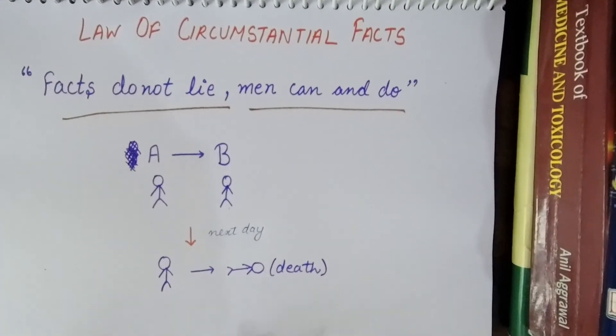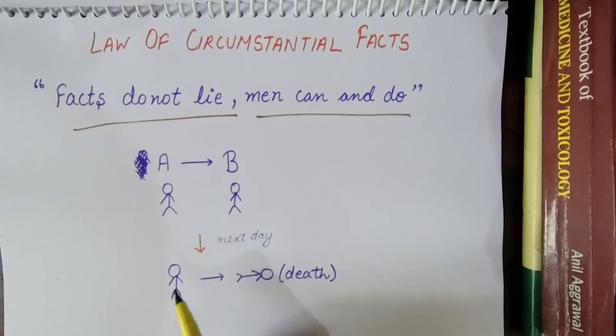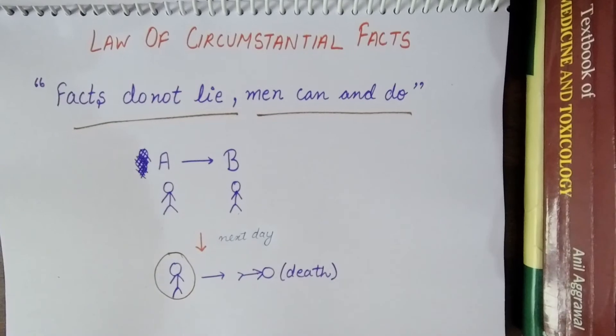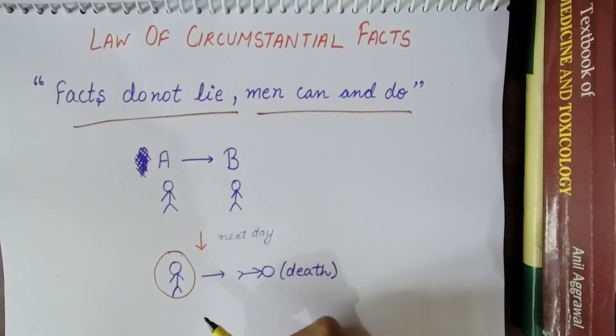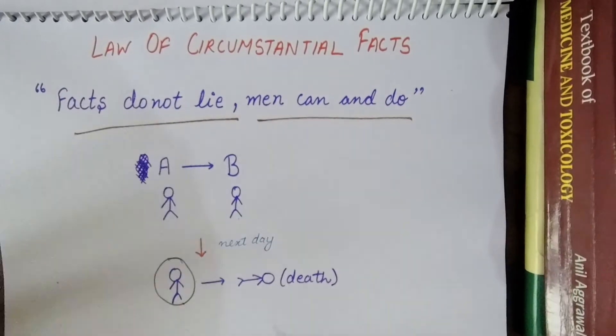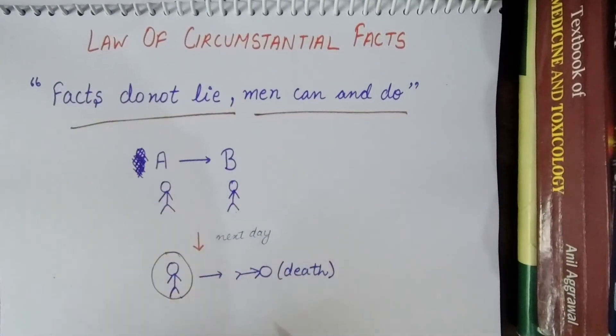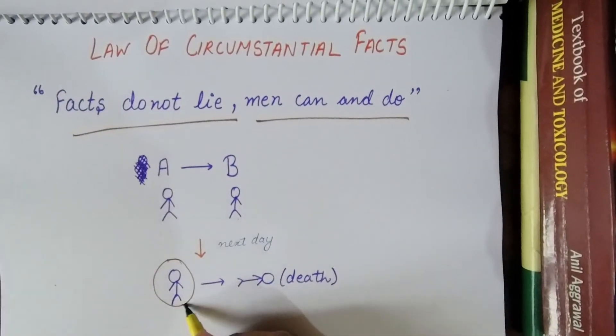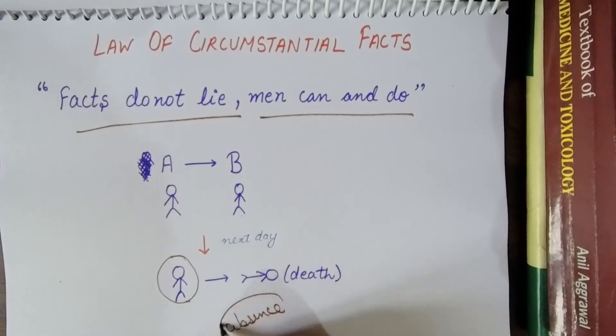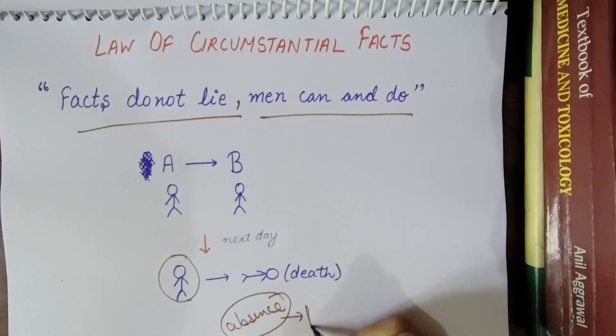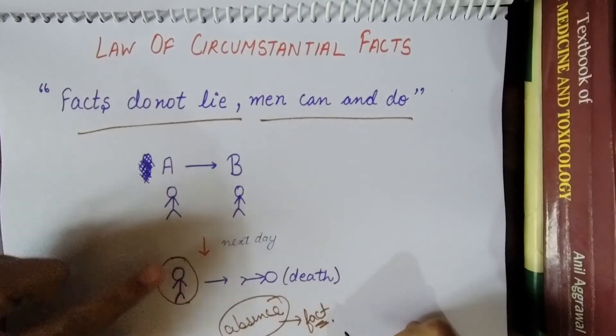Police had doubt only on A, that A has killed B person. So police will investigate. Then A person will say that I was not present at that site. Police investigated, and where the person said he went on some pilgrimage or some place, police investigated that place. But what happened was that person's absence.